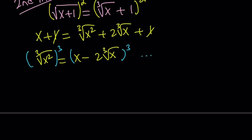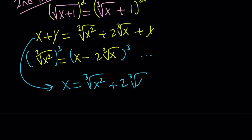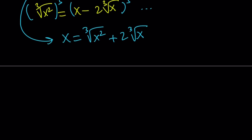So instead of just trying to cube and square both sides all the time, we're going to use substitution. We have x equals cube root of x squared plus 2 times the cube root of x. It's nice that we don't have any constants here. So we're going to substitute — replace cube root of x with z. Then x becomes z cubed, and cube root of x squared becomes z squared.